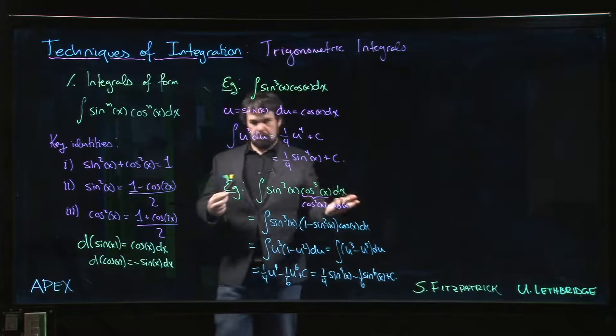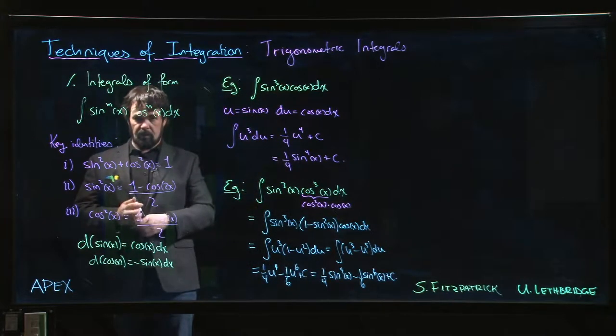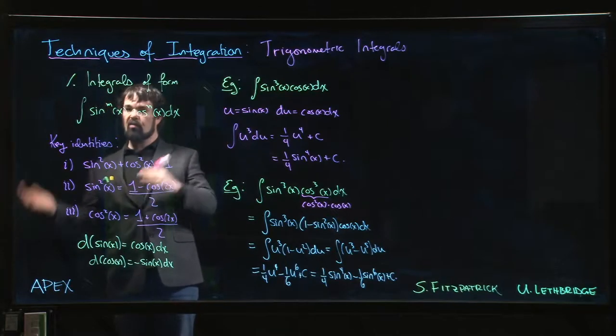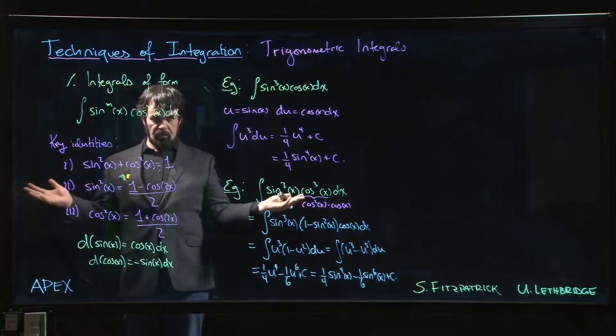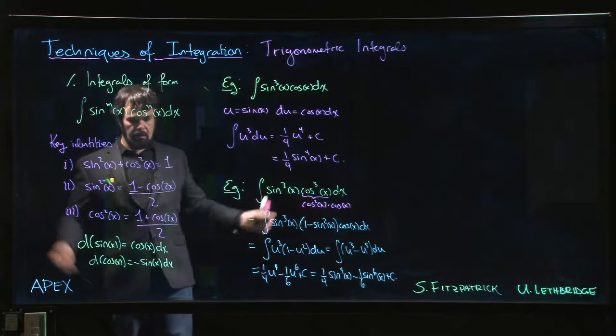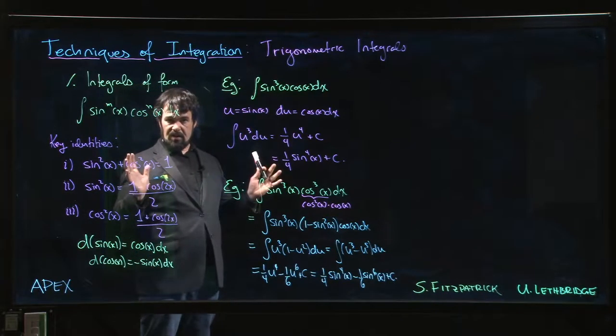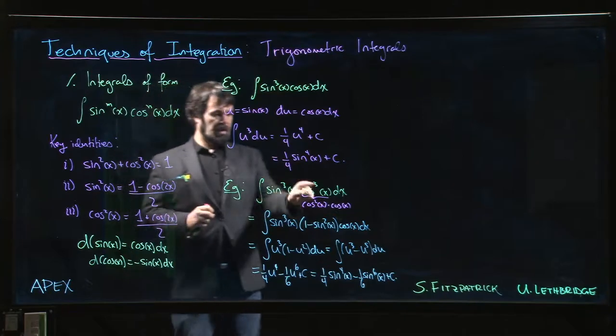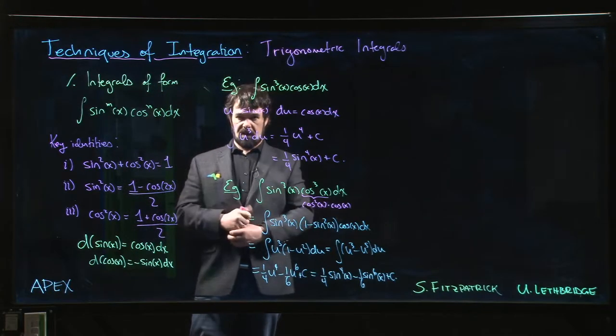So anytime at least one of these two powers is odd, you can use a similar technique to sort of get everything except for that one power in terms of all in terms of sine or all in terms of cosine, and then it's a simple u substitution, and then you've got a polynomial, and we know how to handle polynomials. Situations where both powers are even are a little bit trickier, we'll see examples like that as well. So in the next few videos we'll look at a few more examples, looking at different situations where we vary these powers for sine and cosine, and we'll see how we handle each of those in turn.